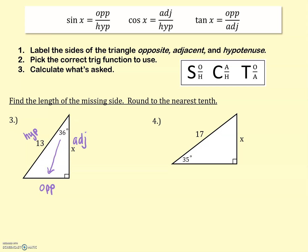In this problem, the particular sides we're using are the 13 and the x — the hypotenuse and the adjacent. So which trig function are we using? We're using cosine: adjacent and hypotenuse. We're going to use this formula to fill in the information we know. The cosine of the angle measure equals adjacent over hypotenuse. So to fill that in: cosine of 36 equals x over 13.